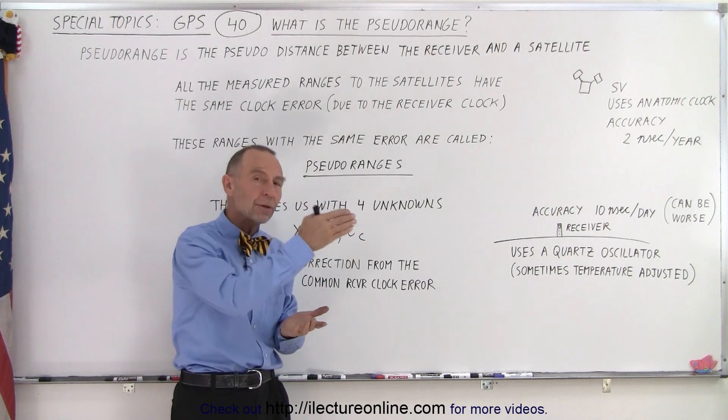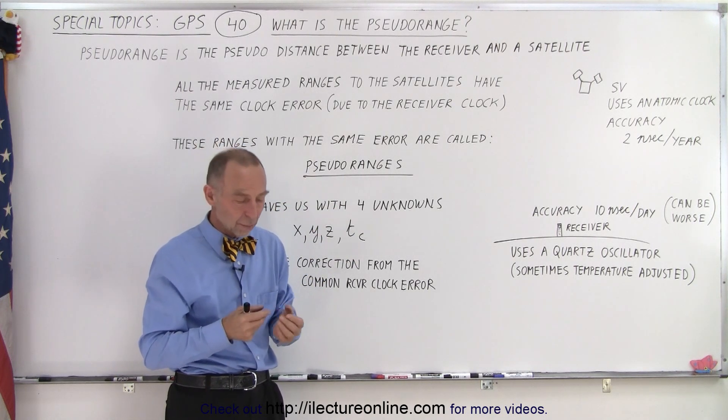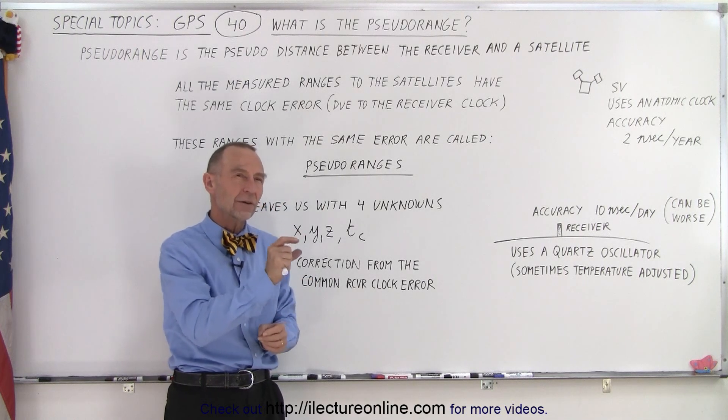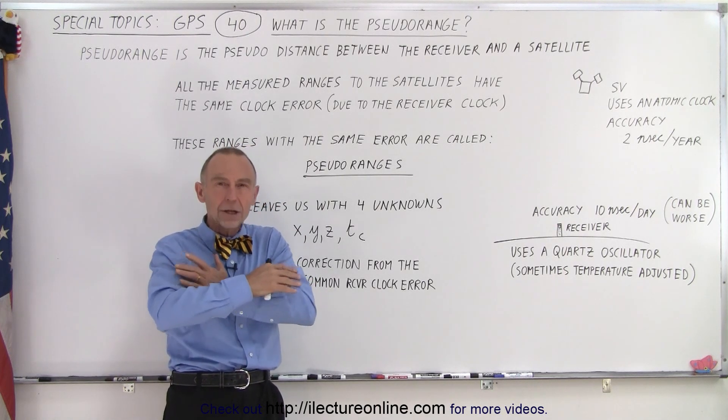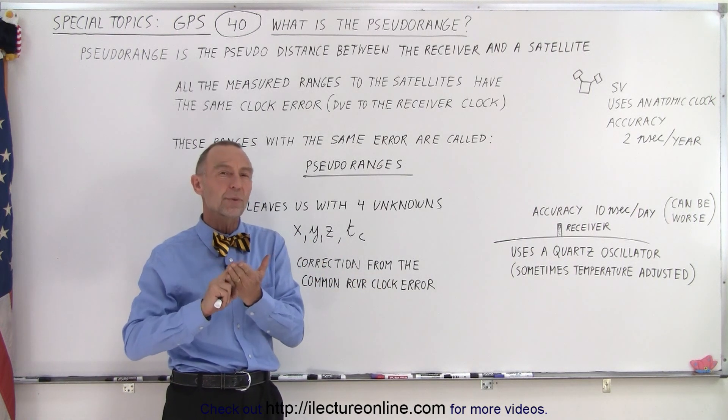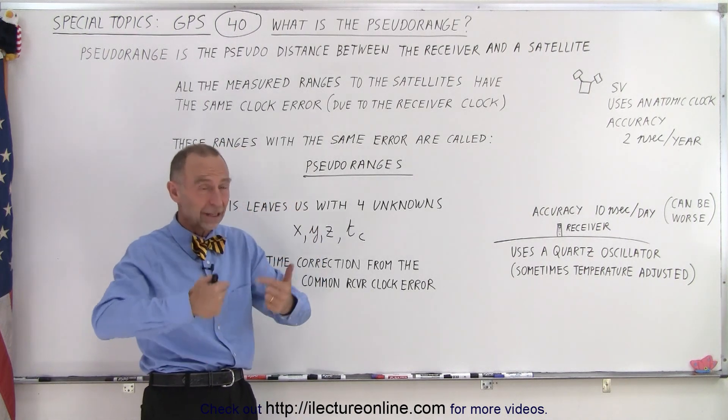So if the error is common we can just call it a common error, and at that point we end up with four unknowns when we're trying to find the distance to the satellite or the distance between the satellite and the receiver.